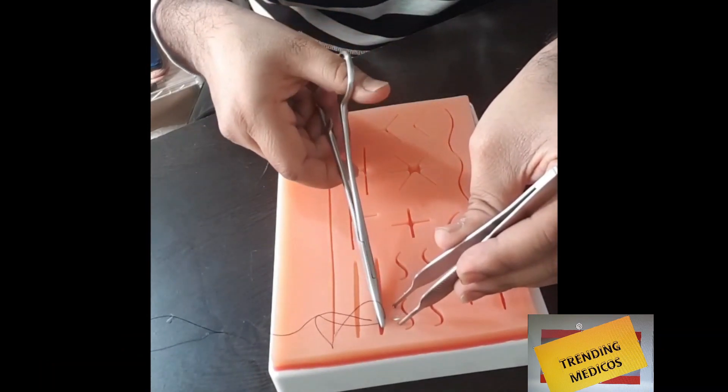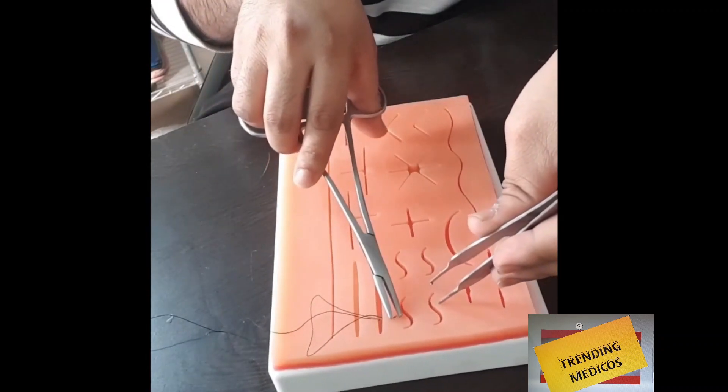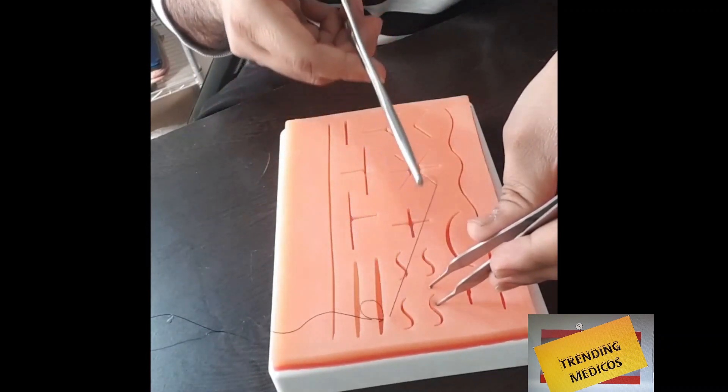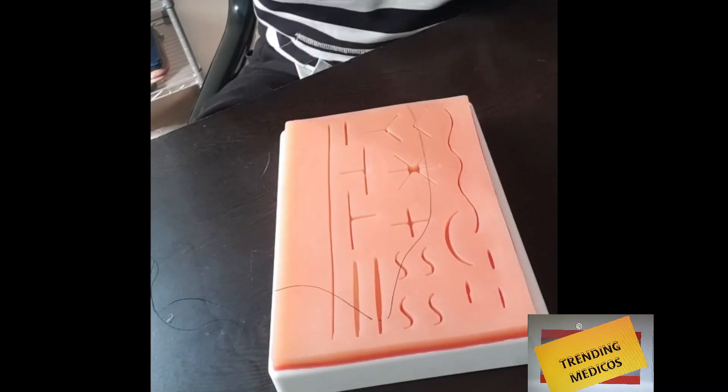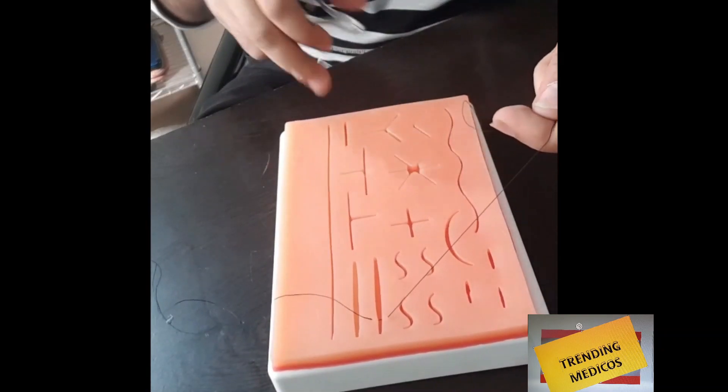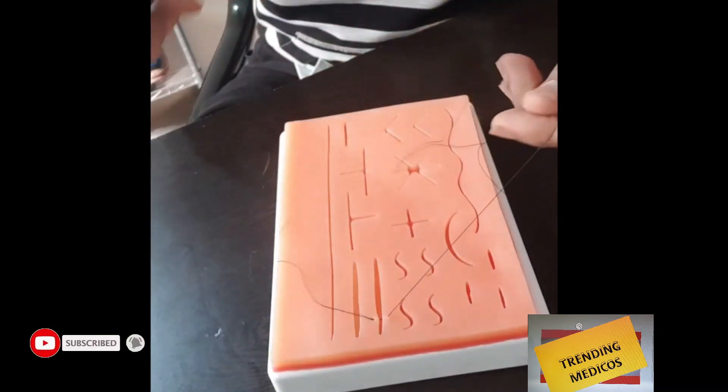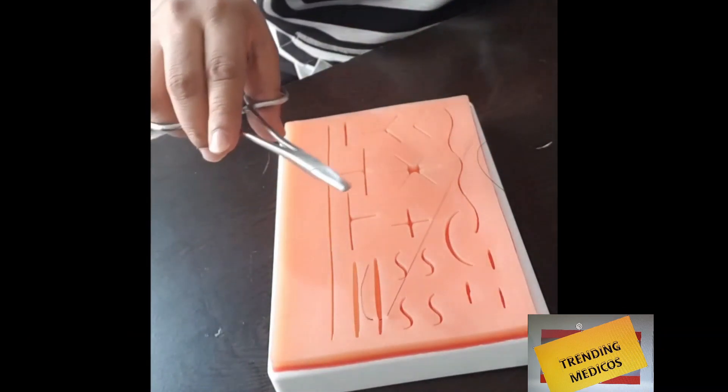When you're through with both edges, pull out the thread completely. Now you have to make the loop.